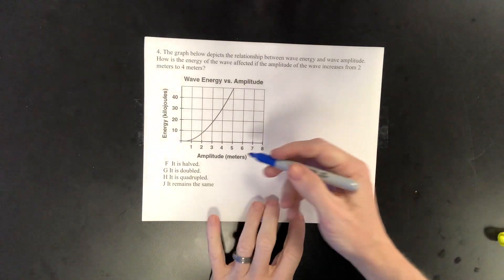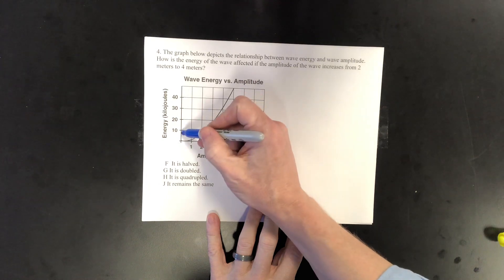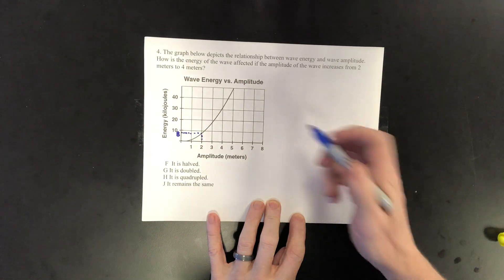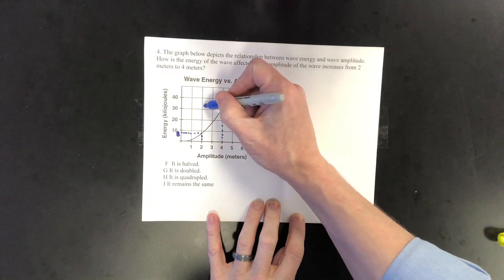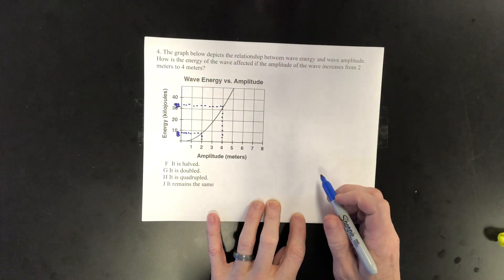On the graph we can see that at 2 meters our energy is about 8 kilojoules. At 4 meters our energy is at about 32 kilojoules.